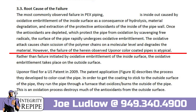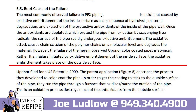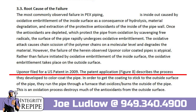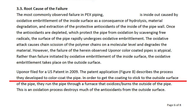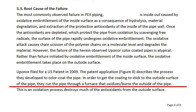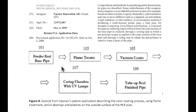The oxidative attack causes chain scission of the polymer chains on a molecular level and degrades the material. However, the failure of the herein observed Uponor color-coded pipes is atypical: rather than failure initiated by oxidative embrittlement of the inside surface, the oxidative embrittlement takes place on the outside surface. Uponor filed for a U.S. patent in 2009; the patent application describes the process they developed to color coat the pipe, running the pipe through a furnace that oxidizes and burns the outside of the pipe, destroying much of the antioxidants from the outside surface.